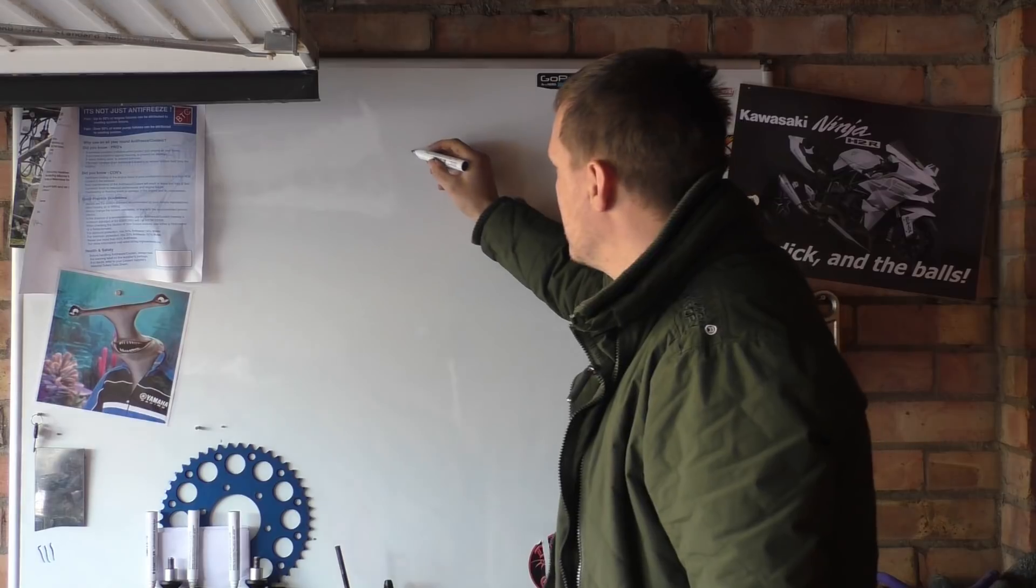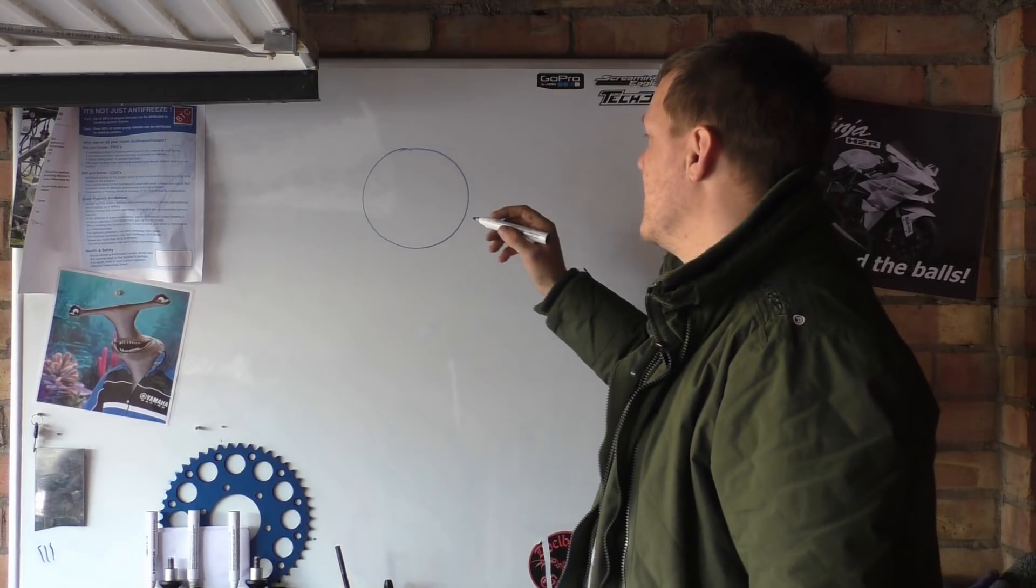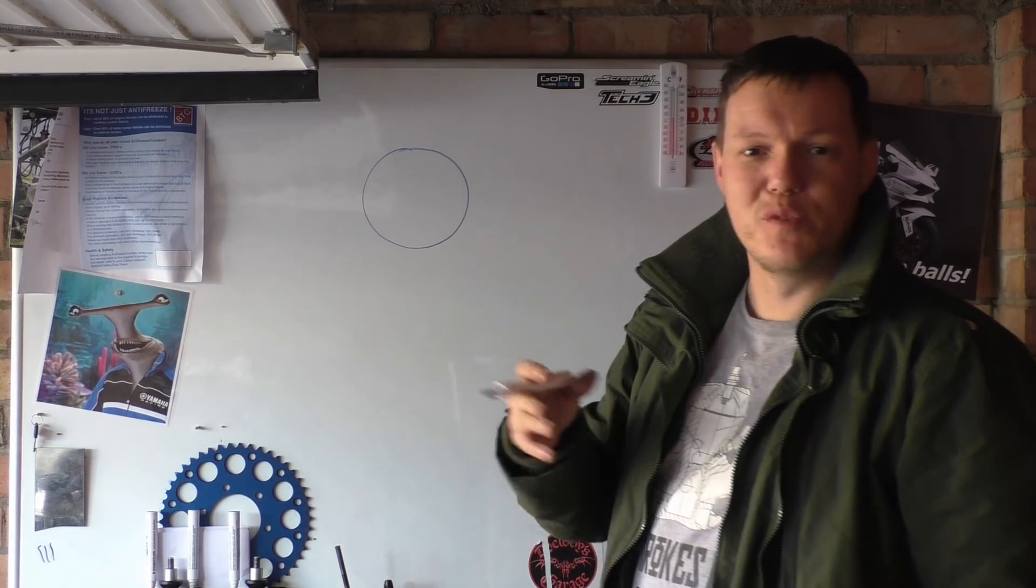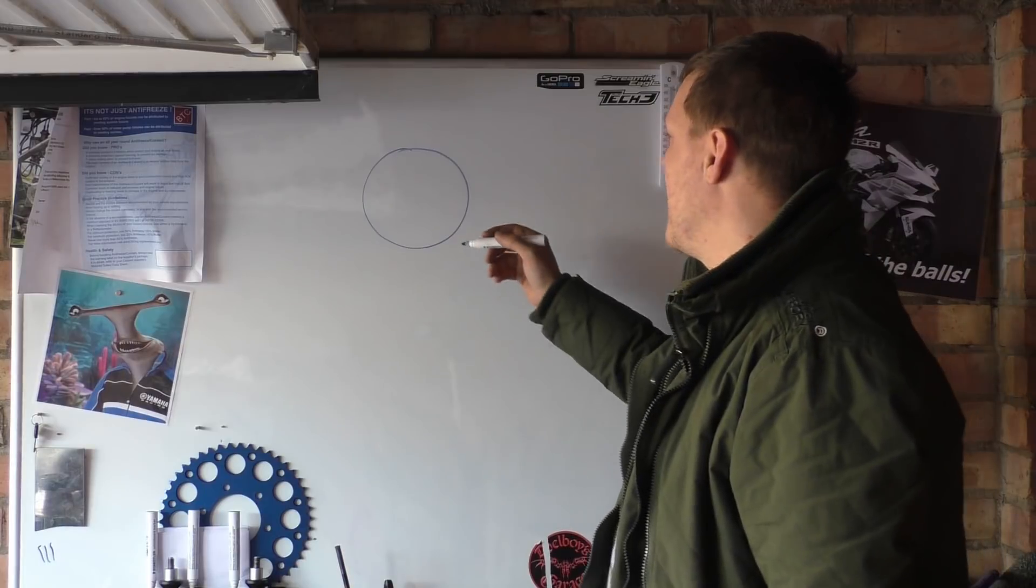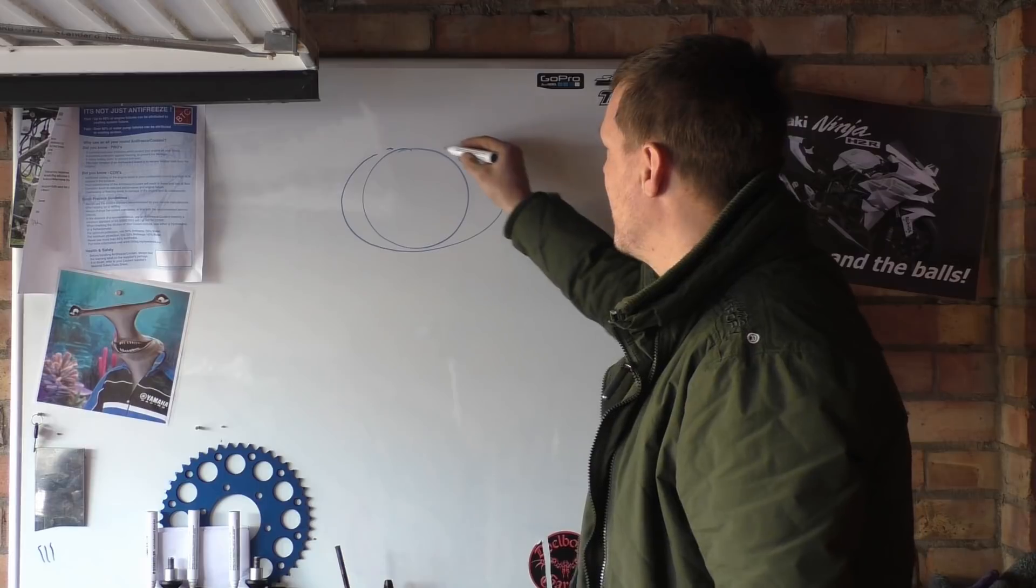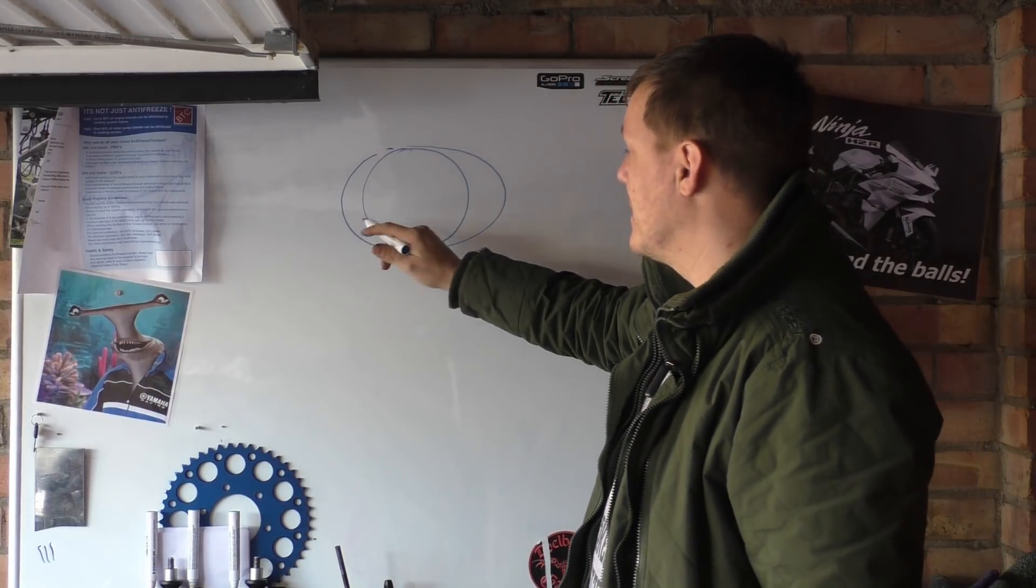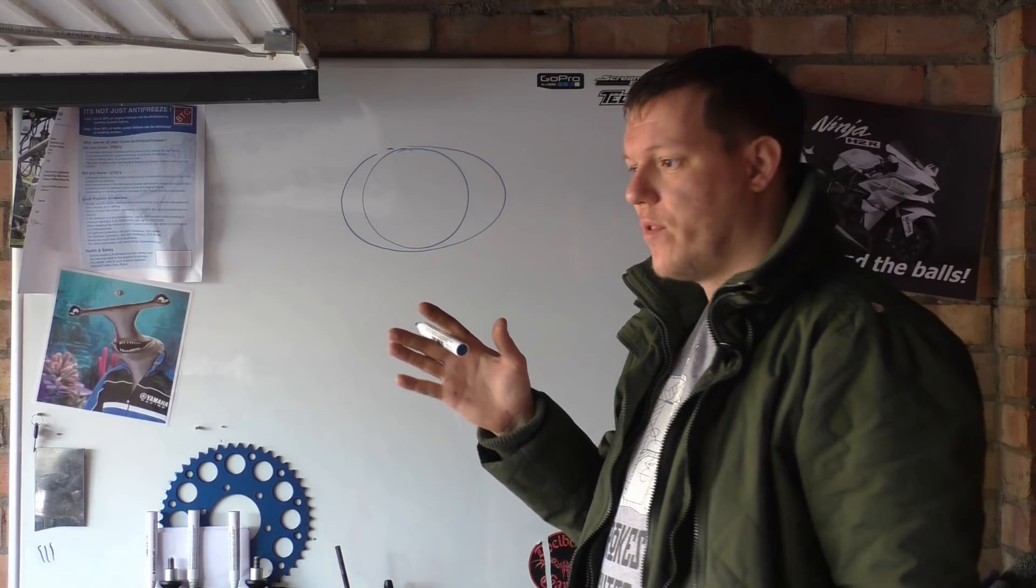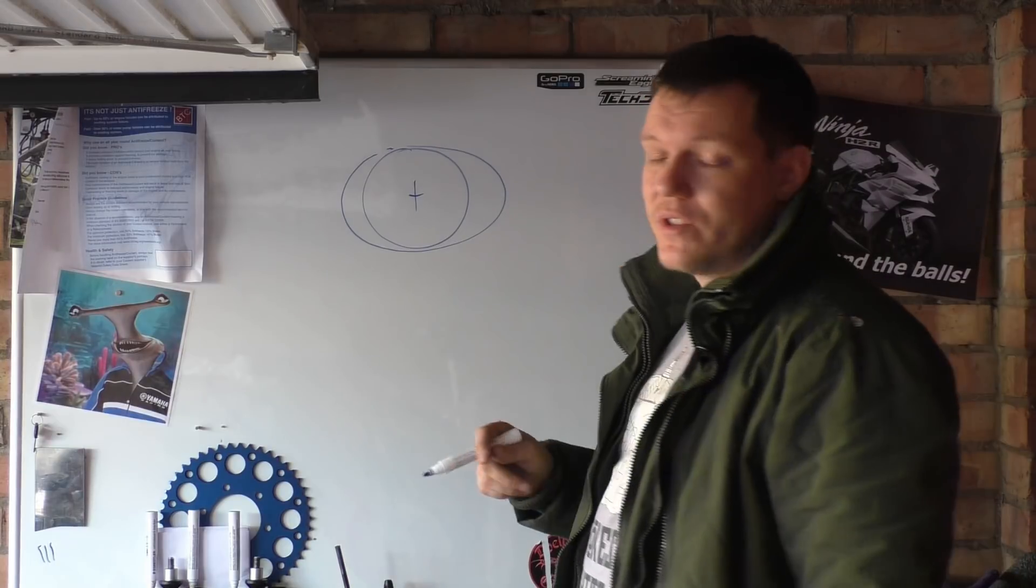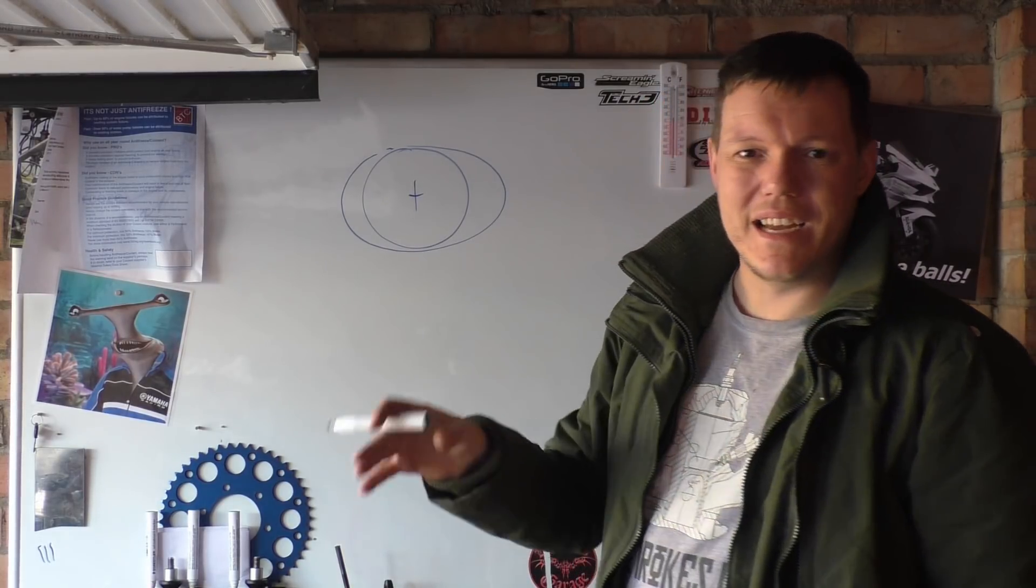What happens over time is that your cylinder will egg shape - it will wear and it will actually wear like this. It'll be worn more on one side than the center. So if we pick the perfect center, it will wear one side more than the other. Generally that doesn't matter and you never really see this, but when you measure it you'll see that.